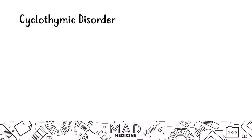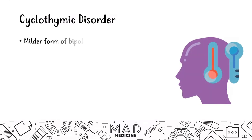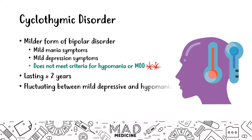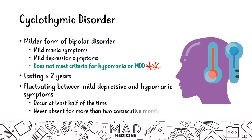Finally, cyclothymic disorder is a mild form of bipolar disorder where patients have mild mania and mild depression but do not meet the criteria for either hypomania or MDD. They last for greater than or equal to two years and fluctuate between mild depressive and hypomanic symptoms. The fluctuation occurs at least half of the time, but it's never absent for more than two months. They won't meet full criteria for hypomania or MDD — it's a very mild bipolar disorder that never fully goes away.